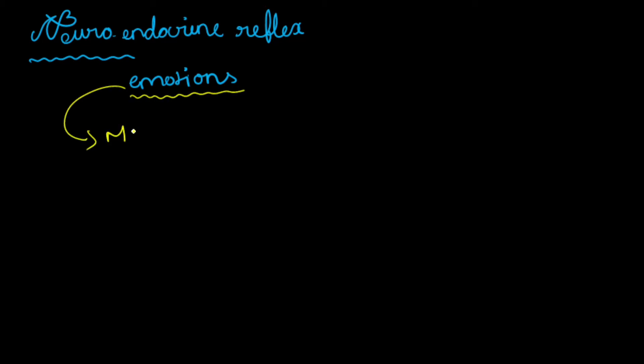Hello learners, today we are going to discuss one of the basic neuroendocrine reflexes, and this particular reflex is closely connected with the emotions of human beings. Whenever we talk about emotions, the first person who comes to mind is our mother. This reflex is closely related to mother and child, that is none other than milk ejection reflex or milk letting reflex.